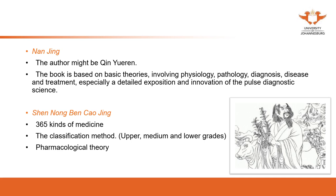The third classic is the Shennong Bencao Jing, a classic on herbal medicine covering 365 kinds of medicine. From the literature, we can trace its development from 34 to 43 and eventually 365 different kinds of medicine, representing the accumulation and development of materia medica. The classification method — upper grade, medium grade, and lower grade — was one of the most advanced classification methods of that period.